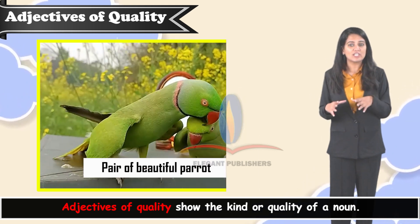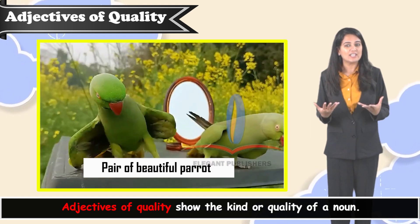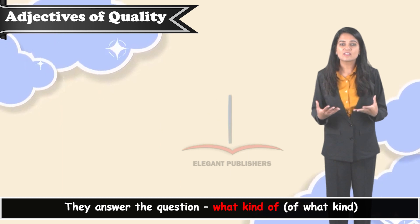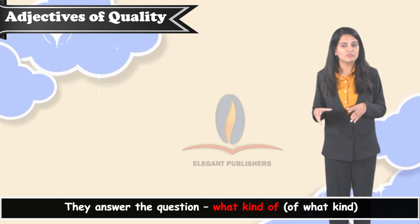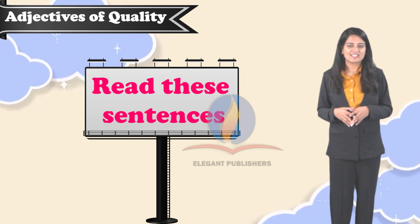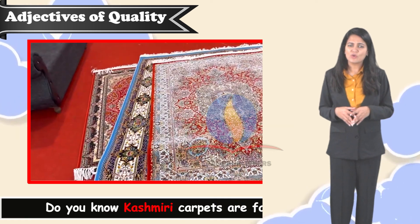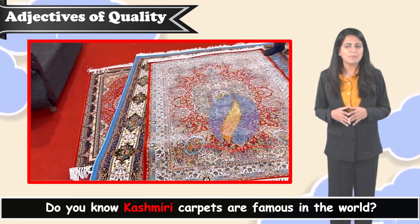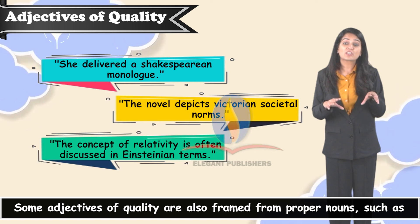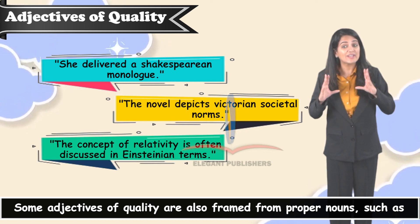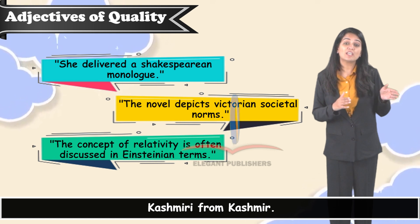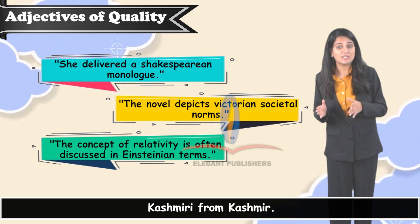Adjectives of quality show the kind or quality of a noun. They answer the question 'what kind of' or 'of what kind.' Read this sentence: Do you know Kashmiri carpets are famous in the world? Some adjectives of quality are also formed from proper nouns, such as 'Kashmiri' from 'Kashmir.'